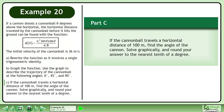Now we'll move on to Part C. If the cannonball travels a horizontal distance of 100 meters, find the angle of the cannon, solve graphically, and round your answer to the nearest tenth of a degree.